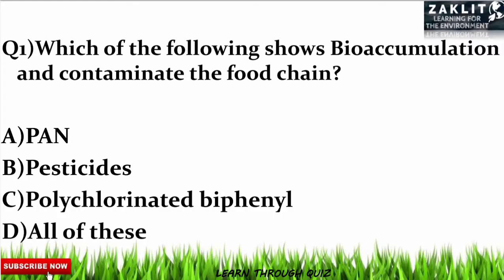The first question was: which of the following sources bioaccumulate and contaminate the food chain? The correct option is D — all of these — because PAN (peroxyacetyl nitrate), pesticides, and PCBs are all responsible for bioaccumulation in the food chain.